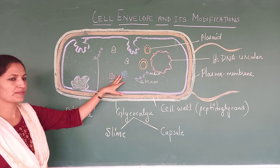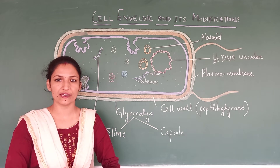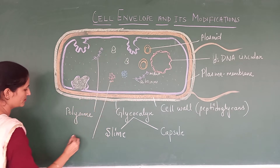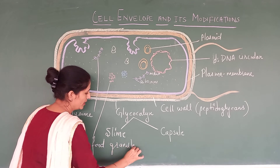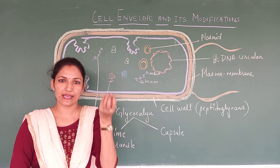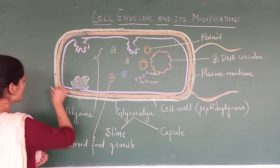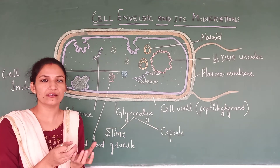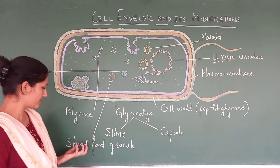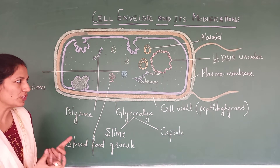These granules of stored food can be in different forms — it can be in the form of phosphate, or it can be in the form of glycogen. These are the stored food granules. These types of structures which get collected in the cytoplasm to make granule-like structures are collectively termed as cell inclusions.